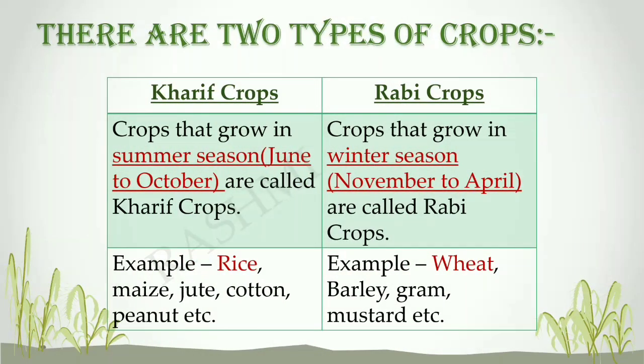Kharif crops are usually sown with the advent of the monsoon season, that is, at the beginning of the first rains in June, and they are harvested at the end of the monsoon season, that is, in October or November. Some examples of Kharif crops are rice, maize, jute, cotton, and peanut.